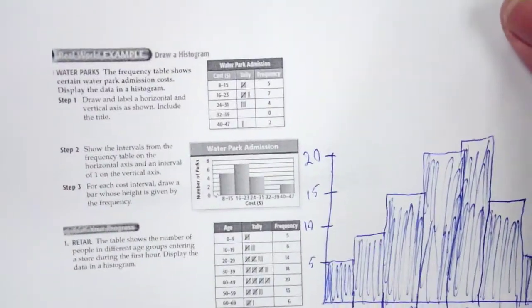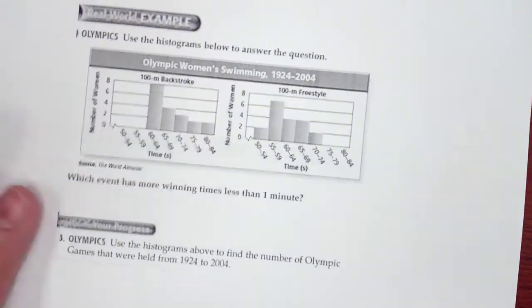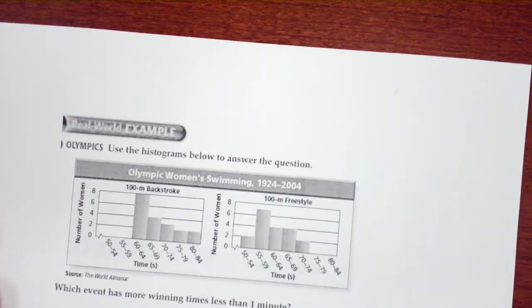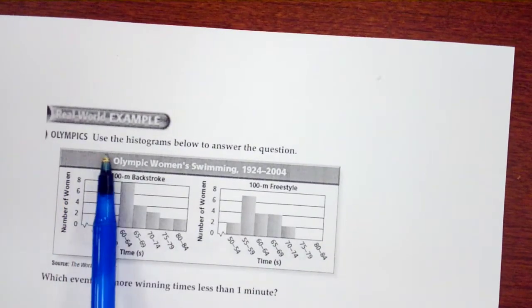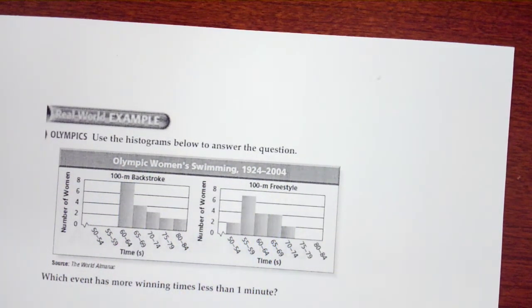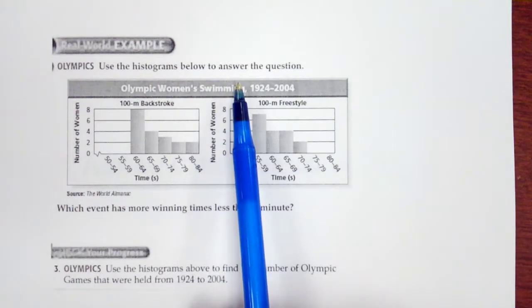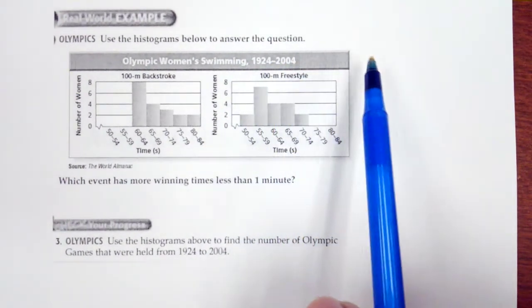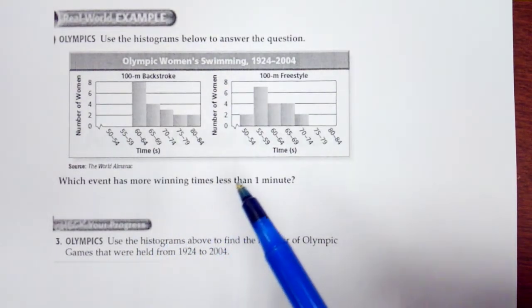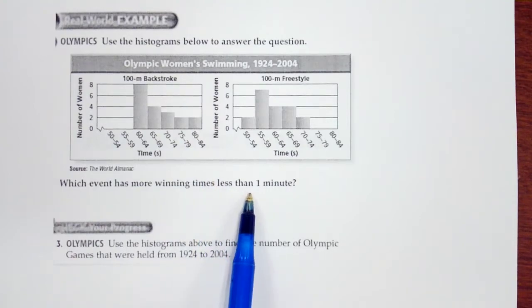Okay, let's go ahead and look at our last example. Okay, so use a histogram to answer the question. So we have Olympic swimming. Okay, so we have Olympic women's swimming, 1924 to 2004.